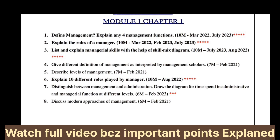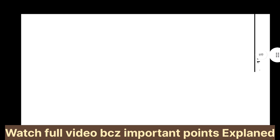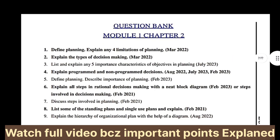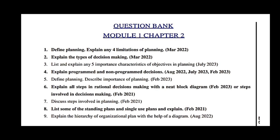Discuss the modern approaches of management — 6 marks, February 2021. Chapter 2 is Planning. Define planning and explain four limitations of planning — March 2022. Explain the types of decision making — March 2022. List and explain any five important characteristics or objectives of planning — July 2023. Explain programmed and non-programmed decisions — August 2022, July 2023, and February 2023.